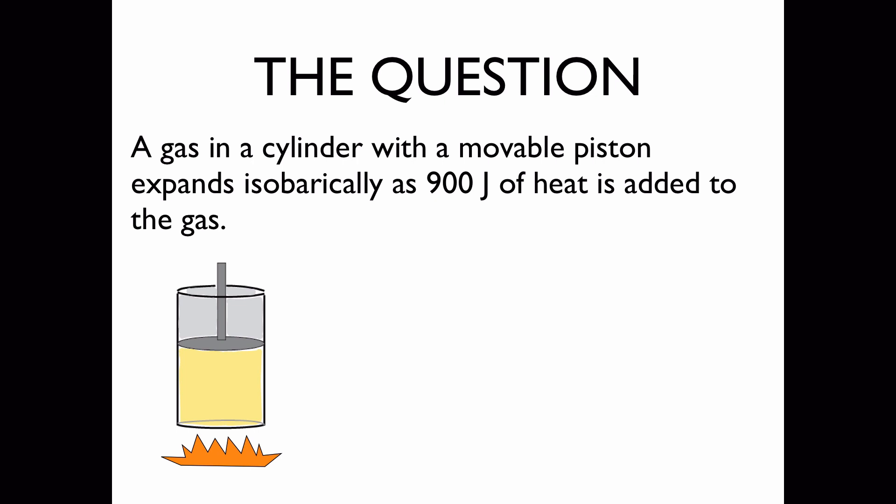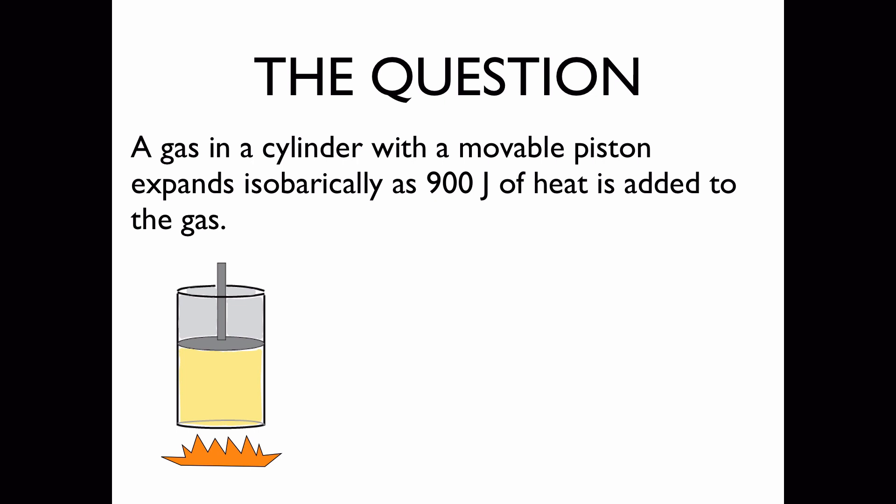The question. A gas in a cylinder with a movable piston expands isobarically as 900 joules of heat is added to the gas.